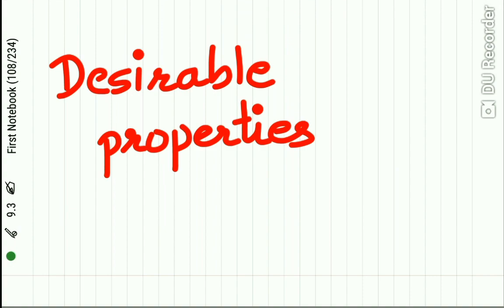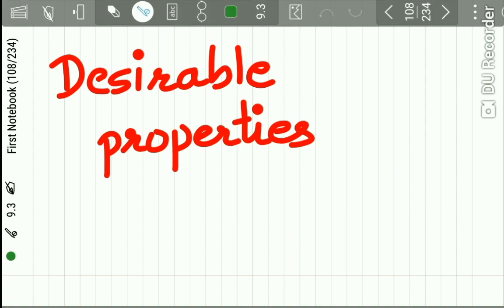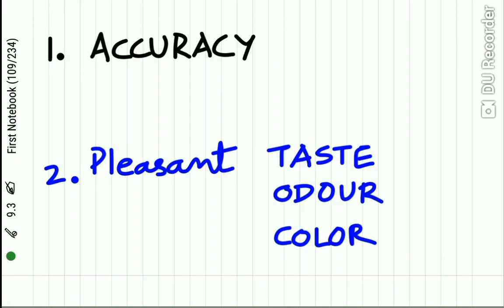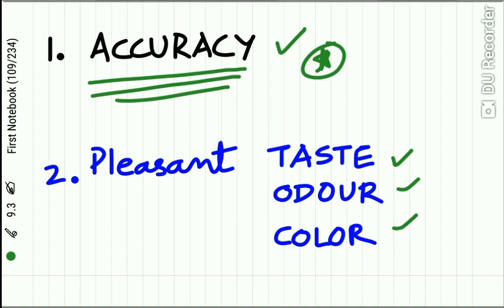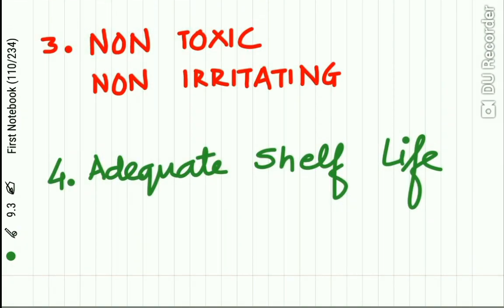Now let us see what are the desirable properties of a dental impression material. First, accuracy — when you make an impression of some tissues there should be an accurate recording of those tissues. Then, since we use this material inside the patient's mouth, the impression material should have an acceptable taste. The next important property is that it should be non-toxic and non-irritating.